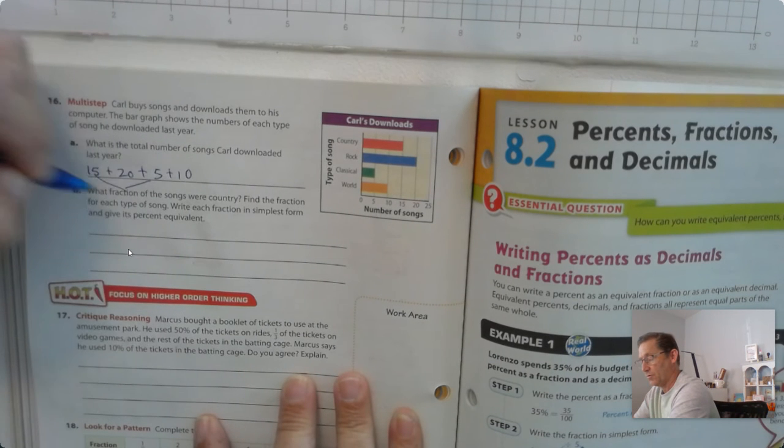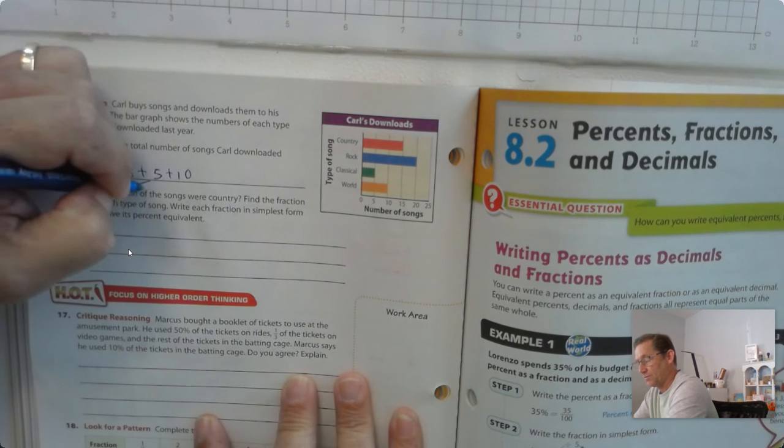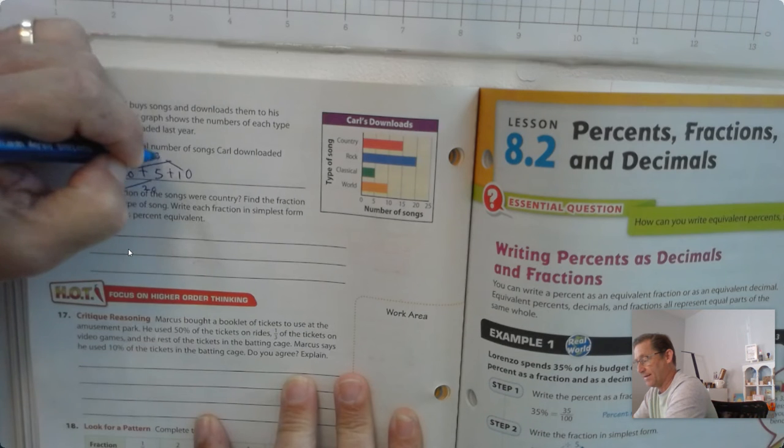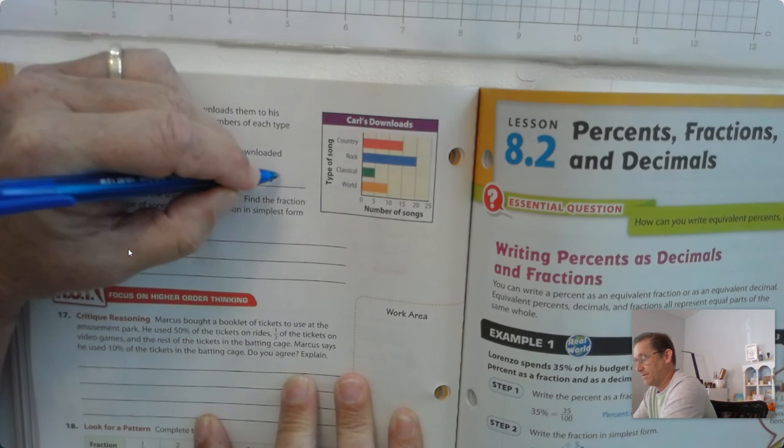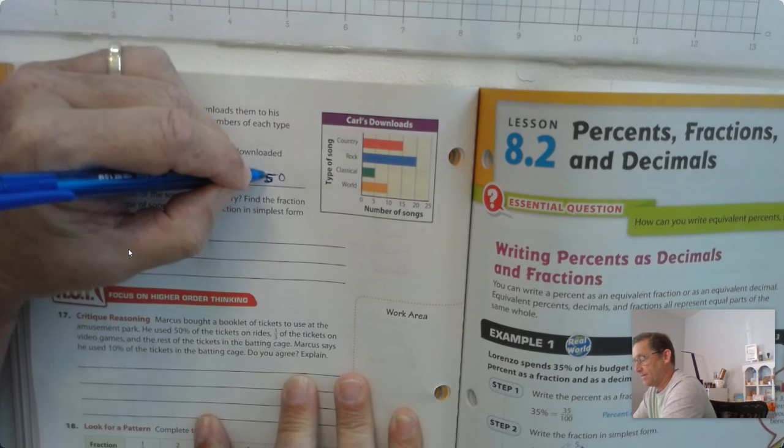Well, I'm going to group those two and get 20. I'm going to group the 20 and 10 and get 30. And 20 plus 30 is 50. So he has 50 songs.